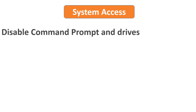Point number 5: System Access. Command prompts can be used to run sensitive commands that can give high-level access to users and evade other restrictions on the system. Hence, ensure command prompt is disabled for all users. Make sure removable media like USB drives, DVDs, CDs, and drives, and also anonymous SID enumeration, is disabled.